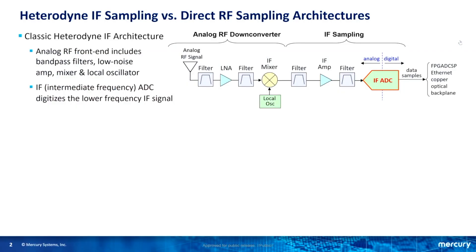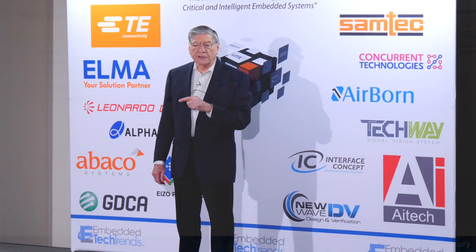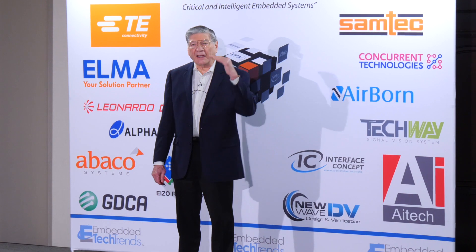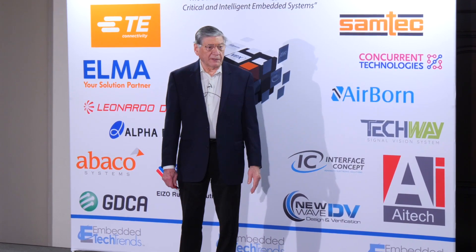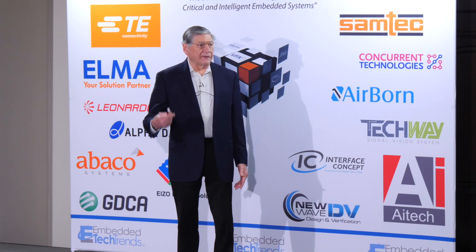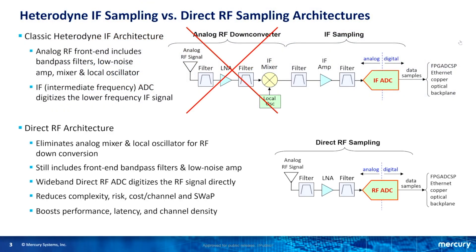As a review, what Direct RF really is means replacing the traditional heterodyne receiver block diagram, which includes an analog RF front end that takes high-frequency RF signals and translates those signals down in frequency to a lower frequency that an A-to-D converter can digitize. The Direct RF approach is to directly sample the RF signal instead of converting it down to a lower frequency, because A-to-D converters have gotten faster and faster. Direct RF sampling eliminates that front-end analog frequency translation stage.